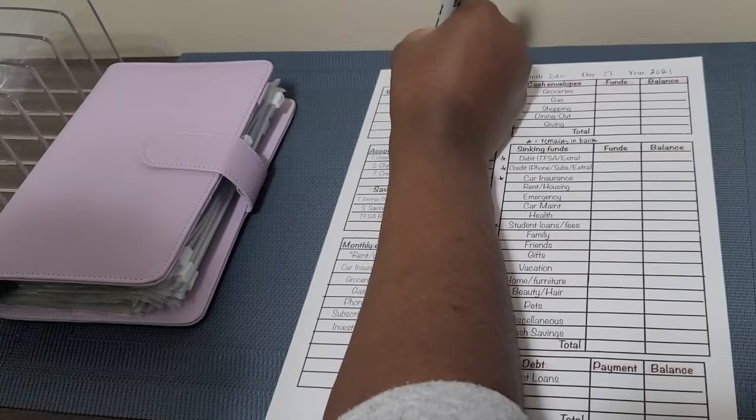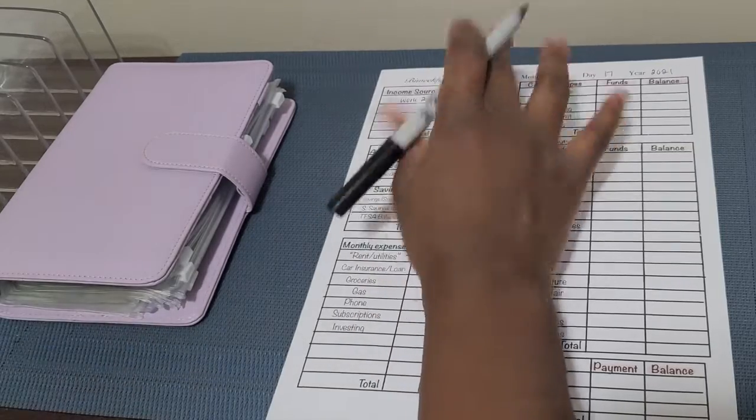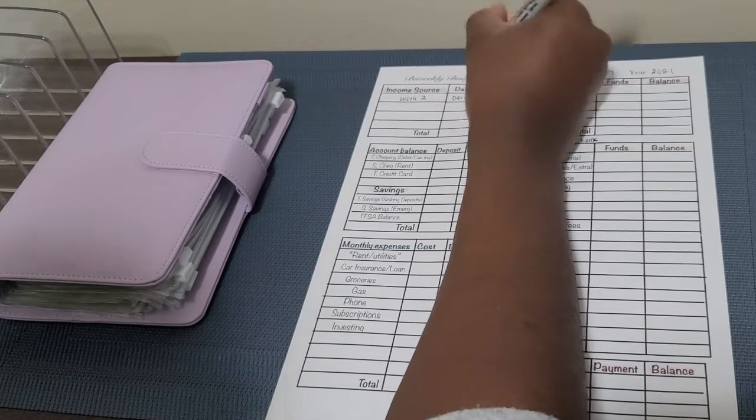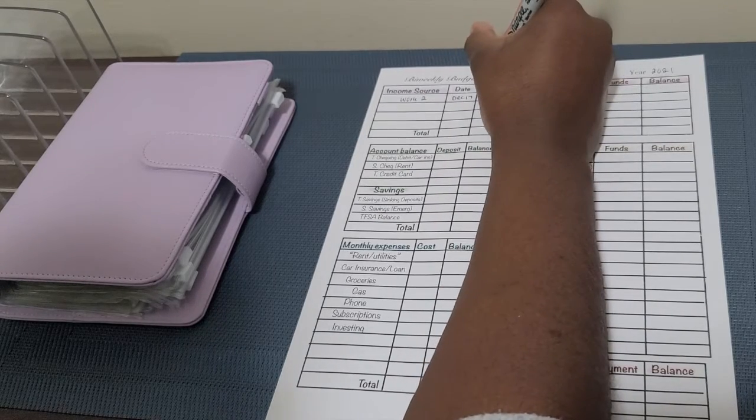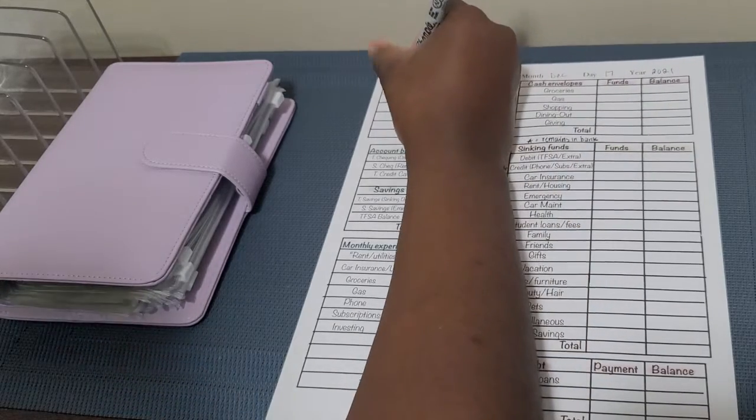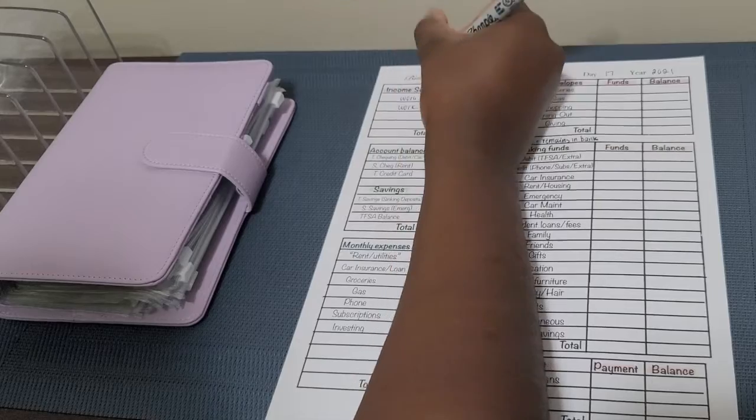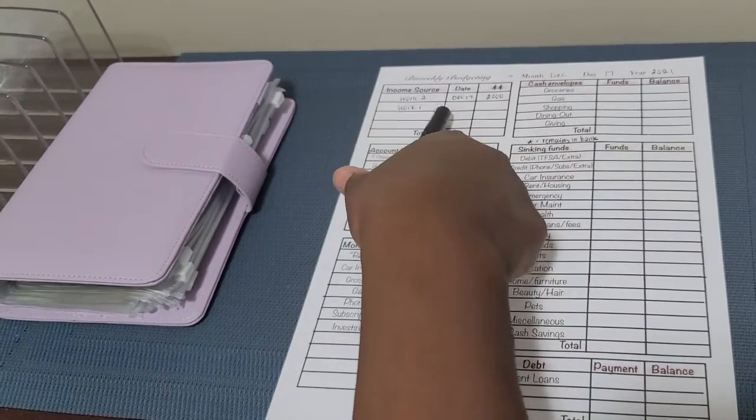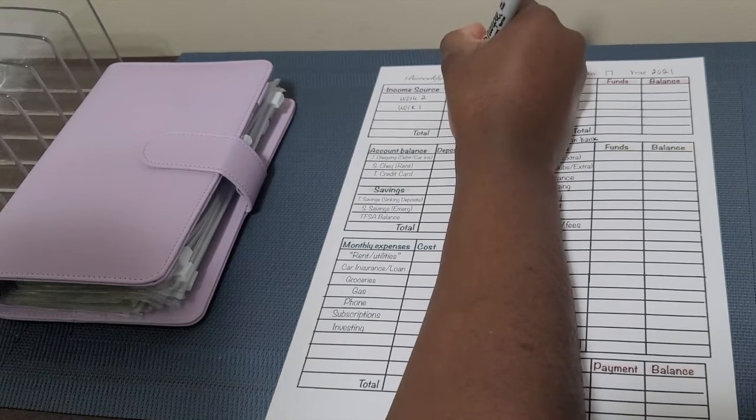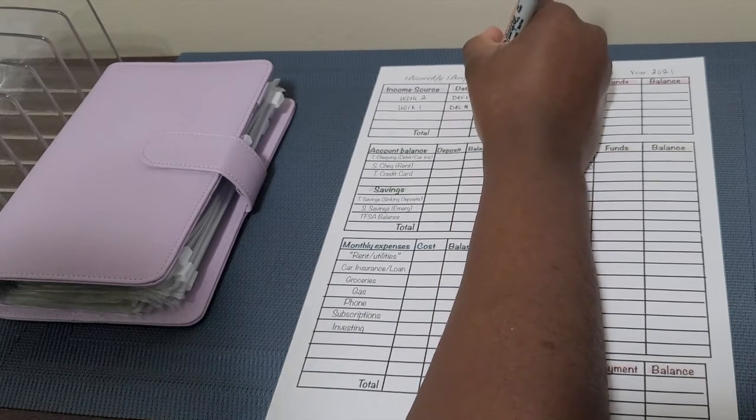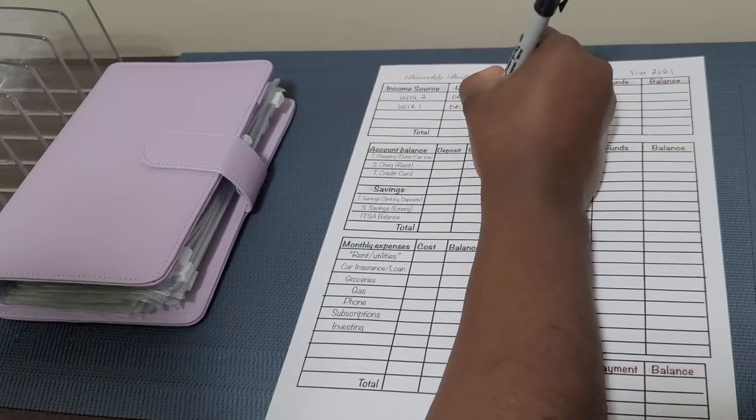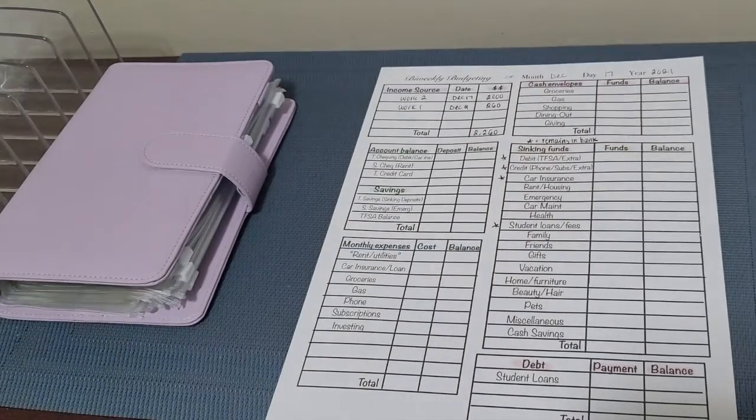Then income sources. So I do work two, because that's the most recent one and that's the largest amount, and that was today actually, December 17th, and that amount was $2,000. And then my work one, which is just my first employment for this year, which was December 9th, and that one was $260. So in total we have $2,260 that we're going to be working with.